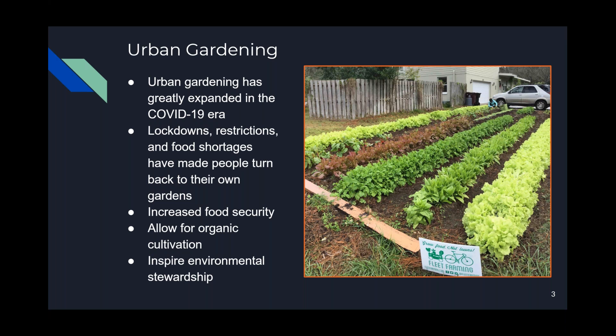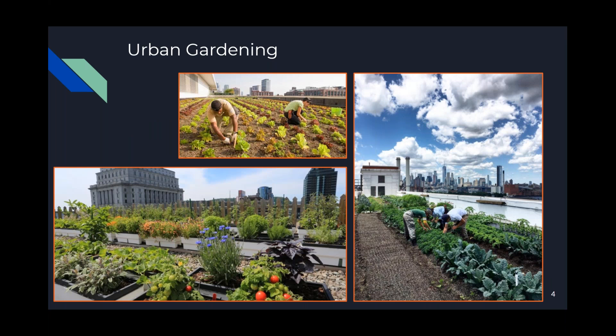And 94% of mammal biomass, excluding humans, is livestock. This means livestock outweigh wild mammals by a factor of 15 to 1. So given these statistics, home and local gardening practices are very important to promote, as they can ease the burden on the world's overall food production system, lower one's environmental footprint, and boost one's resilience, offering an affordable platform for obtaining healthy fruits and vegetables, while also inspiring environmental stewardship.